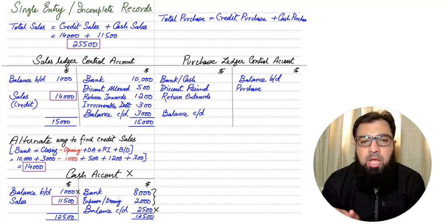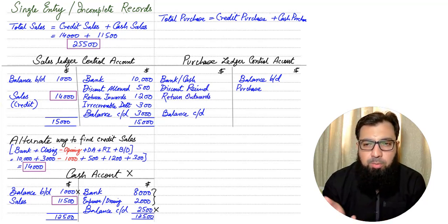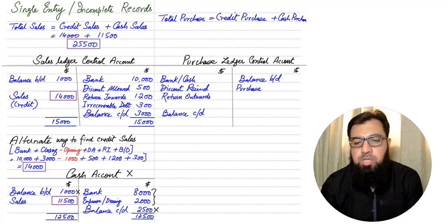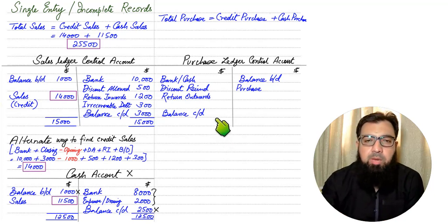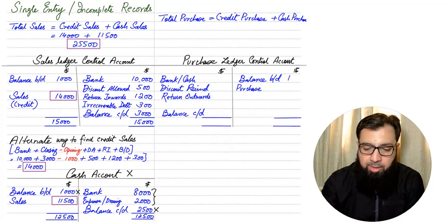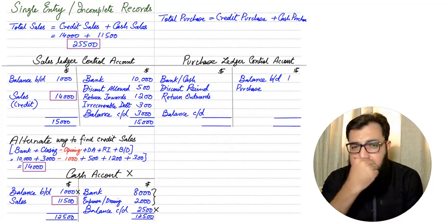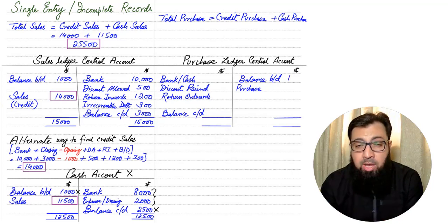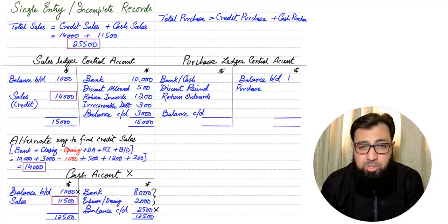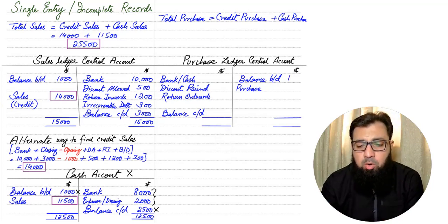Whenever we return faulty goods to a supplier, this is called Return Outward, also known as Purchase Return. Purchase Return or Return Outward reduces the liability — the liability is debited and Return Outward is credited. Now let us calculate a purchase figure using a PLCA.